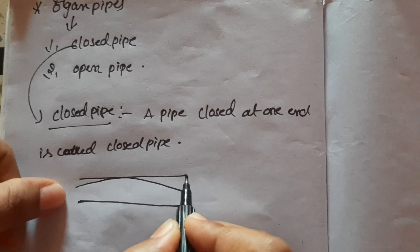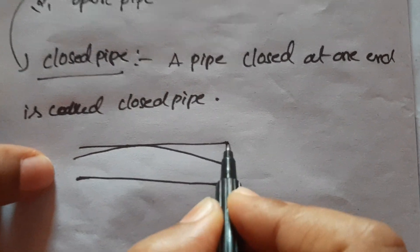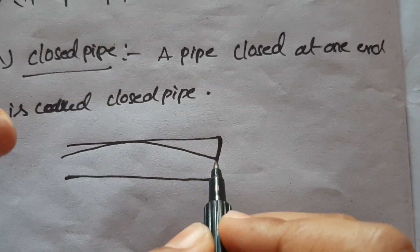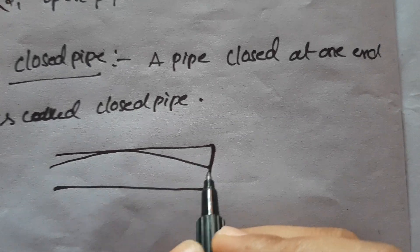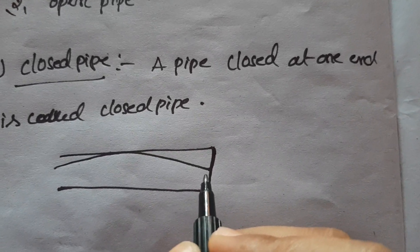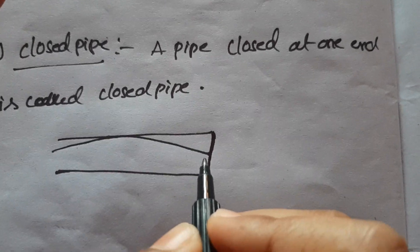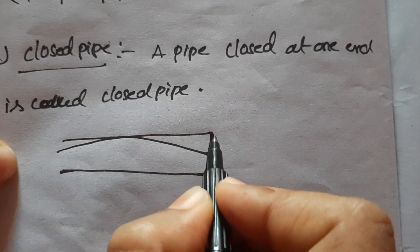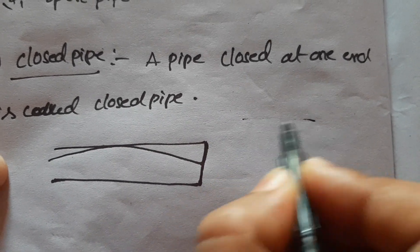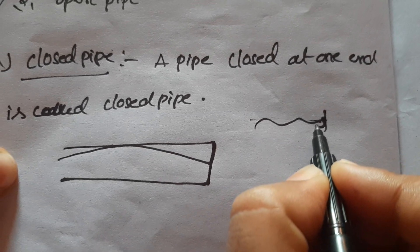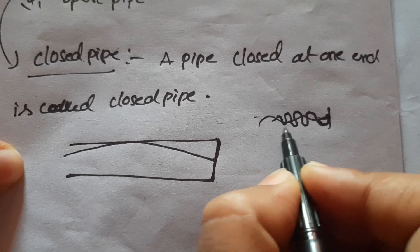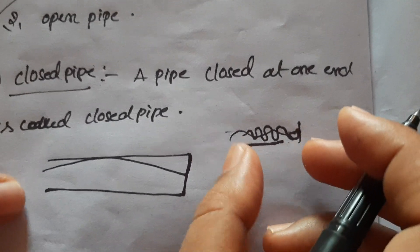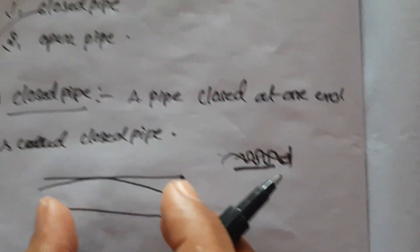This is the result of a rigid body. We close that end and it can reflect — the rigid support automatically reflects the wave. There is a rigid support so we get to the side of the pipe, and the standing wave is formed.